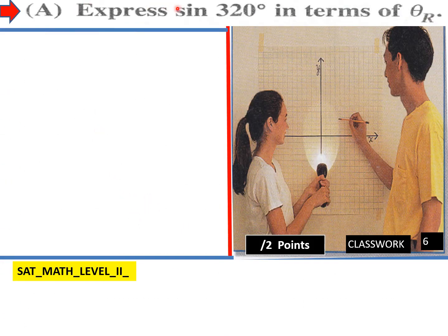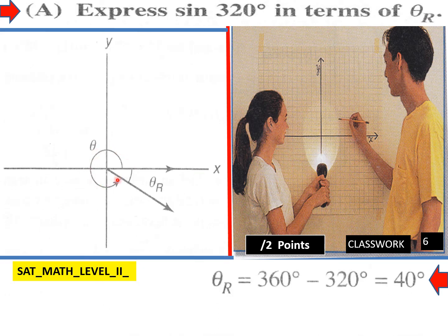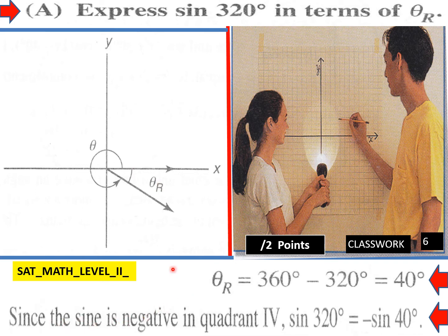Express sine 320 degrees in terms of theta reference. Here's our 320 — we go all the way around. Our theta reference would be this angle here. Theta reference equals 360 minus 320, which is 40 degrees. So you have a 40 degree reference angle. Since sine is negative in quadrant 4 — negative y — sine 320 degrees equals negative sine 40 degrees.